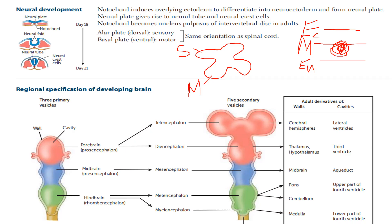Coming back to the diagram, the neural crest cells are going to give us the PNS — peripheral nervous system — and also the adrenal medulla.